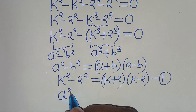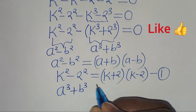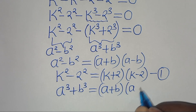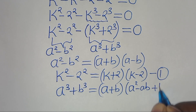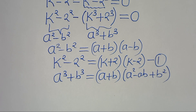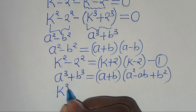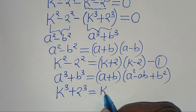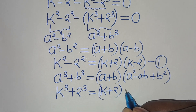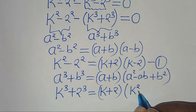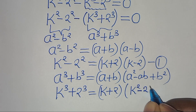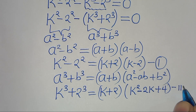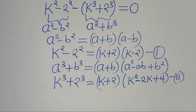The second part is the sum of two cubes: a cubed plus b cubed equals (a + b)(a squared minus ab plus b squared). So k cubed plus 2 cubed equals (k + 2)(k squared minus 2k plus 4). Call this equation 2.